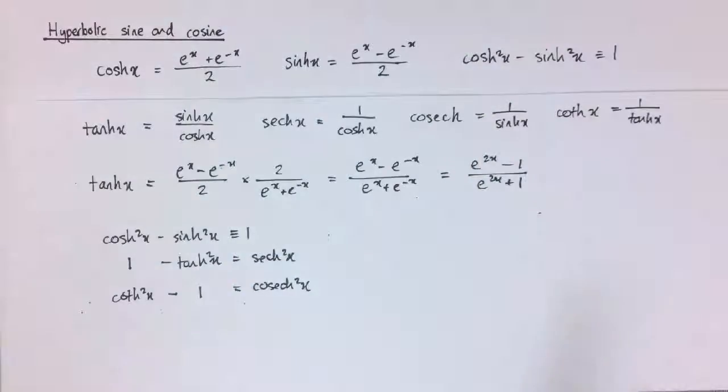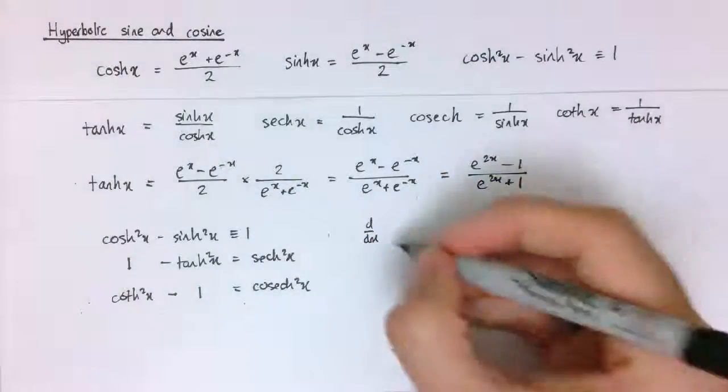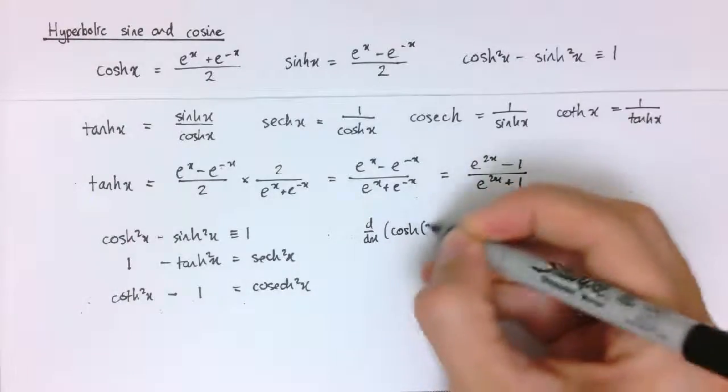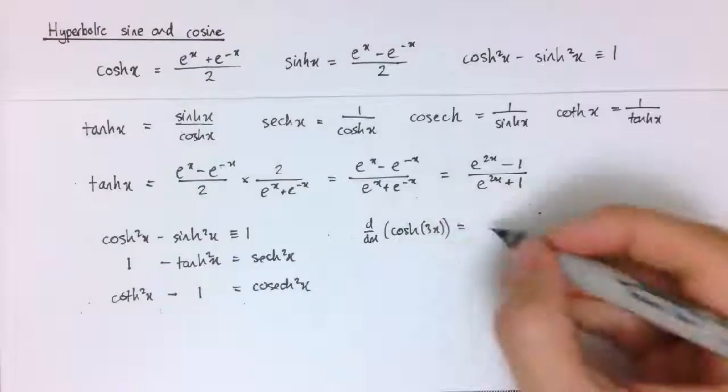So we can use that with the chain rule, the product rule to do some other differentiation and integration. For example, I could say, if I wanted to, that d by dx of cosh 3x, well, that would be cosh differentiates to sinh. And so by the chain rule, we've got 3 sinh 3x.